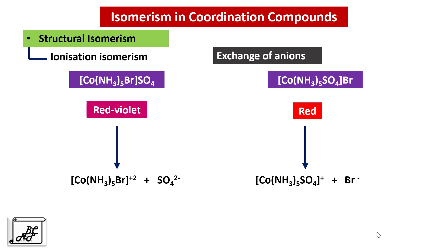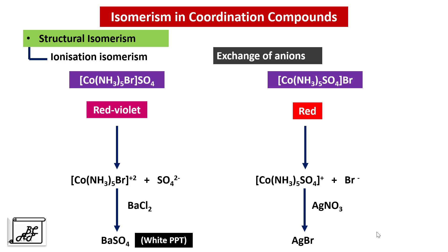The first complex dissociates in water as [Co(NH3)5Br]²⁺ plus SO4²⁻ ion, whereas the second complex dissociates as [Co(NH3)5SO4]⁺ plus Br⁻ ion. In the first case, testing with barium chloride gives a white precipitate of barium sulphate. In the second case, treatment with silver nitrate gives a yellow precipitate of AgBr. These different precipitates indicate different ions in the primary ionization sphere — this is Ionization Isomerism.